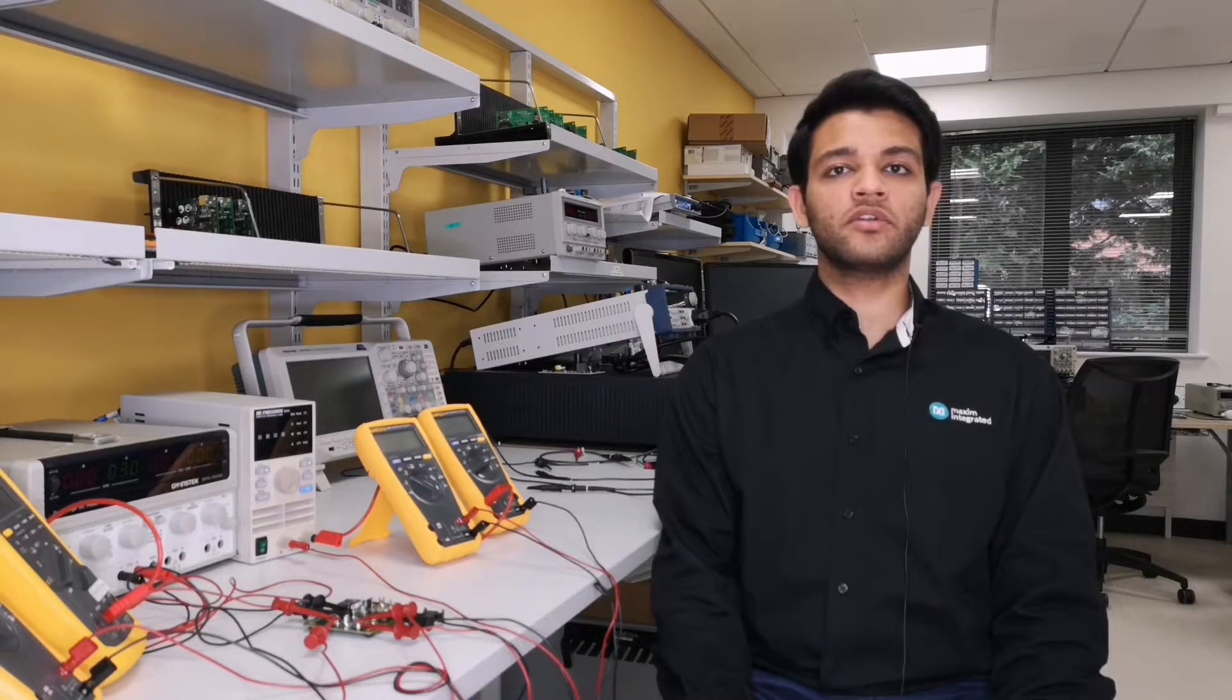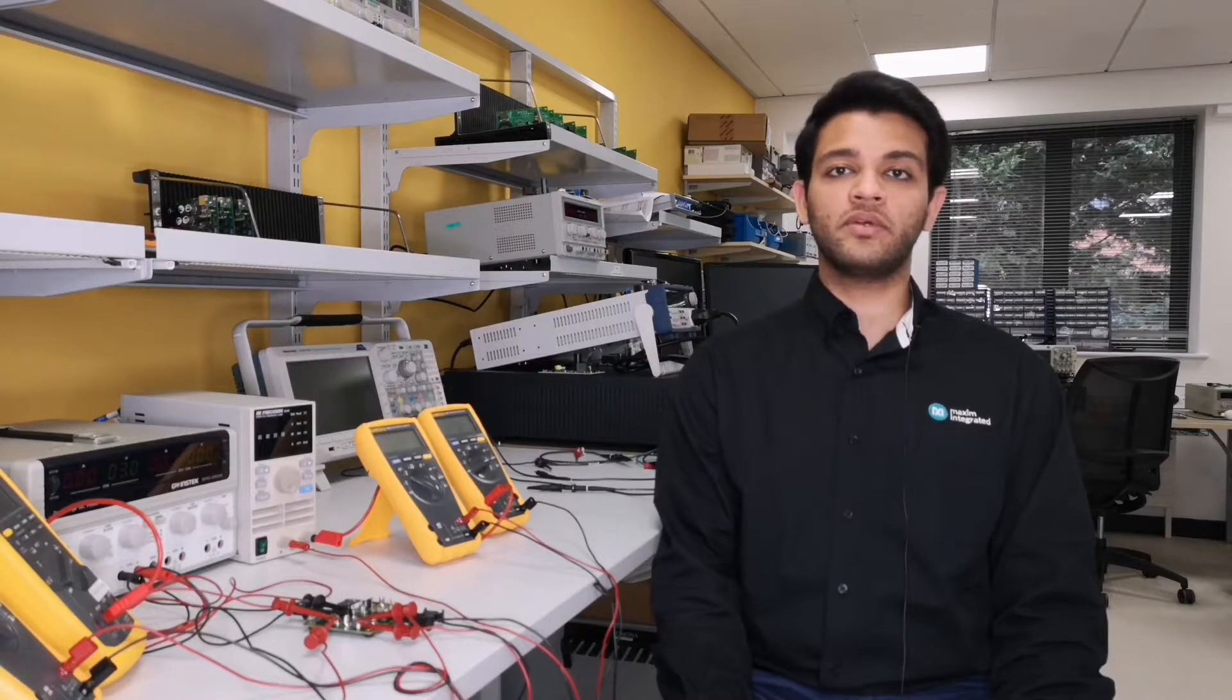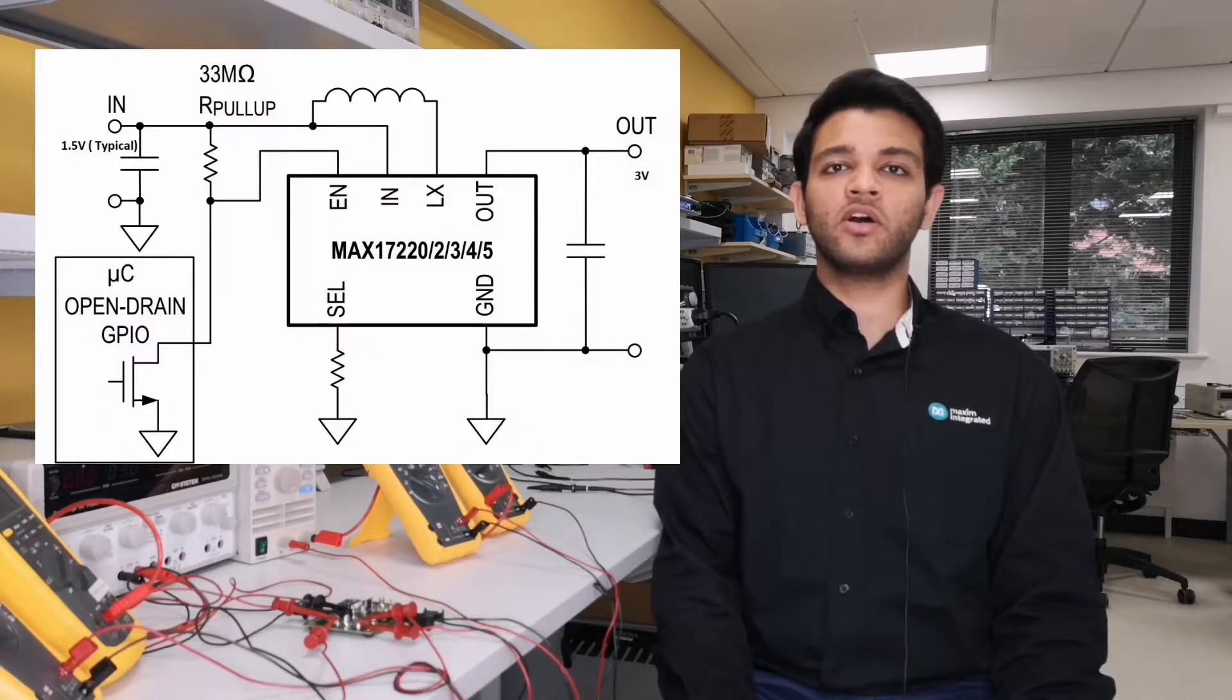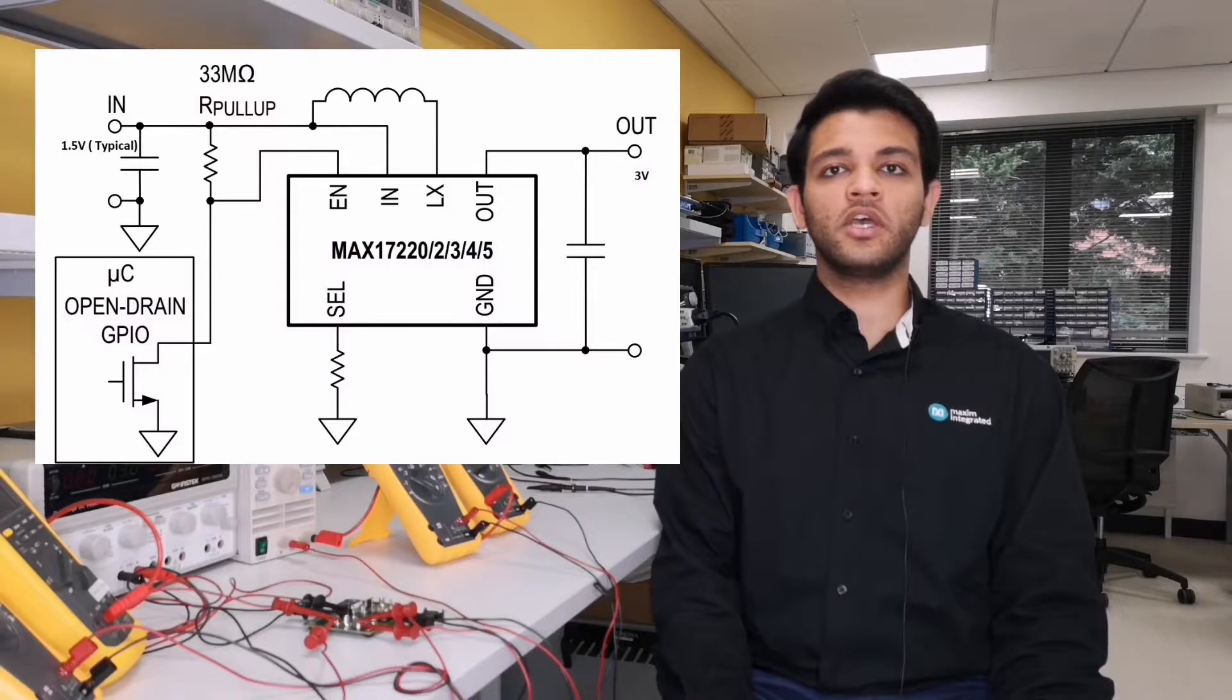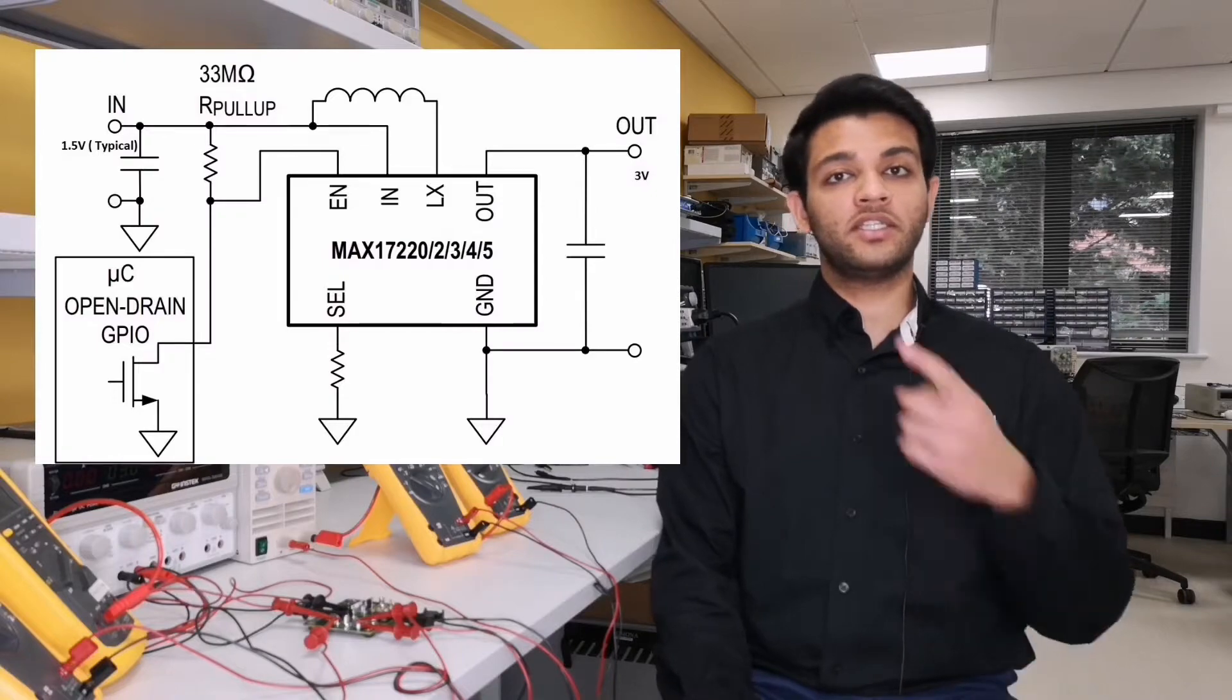The extra current needed for the transient protection circuitry can be calculated as follows. For example, a part configured for a typical output voltage of 3.3 volts for a typical input voltage of 1.5 volts with a pull-up resistor of 33 mega ohms, as in this figure, where eta or the efficiency is estimated to be 85%.